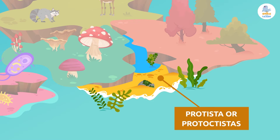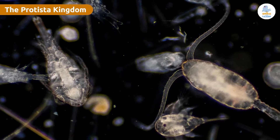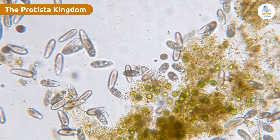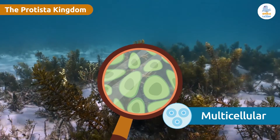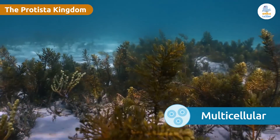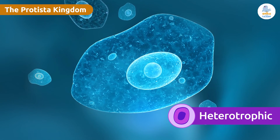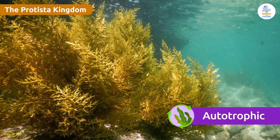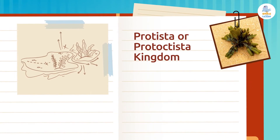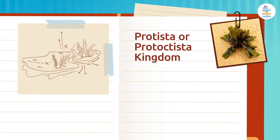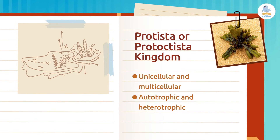The protista kingdom, also called the protoctista kingdom, includes protozoa and algae. The organisms in this kingdom can be unicellular, like protozoa and some types of algae, or multicellular, like many other types of algae — and both types are only visible through a microscope. We can find heterotrophic beings like amoeba that eat other organisms, and also autotrophs such as algae that make their own food using photosynthesis. The characteristics of the protista kingdom are: they can be unicellular and multicellular, and they can also be autotrophic and heterotrophic.